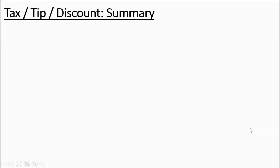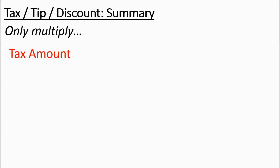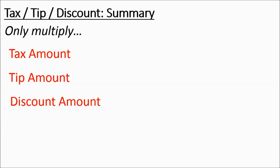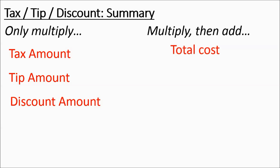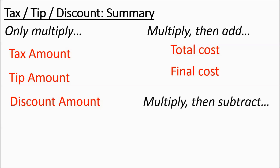To summarize: you're only going to do multiplying if they're just asking for tax amount, tip amount, or discount amount. You're going to do two operations — multiply then add — when they're asking for total cost or final cost. And you're going to multiply then subtract if they're asking for the sale price. That's about it. Hope this helps. Best of luck to you.